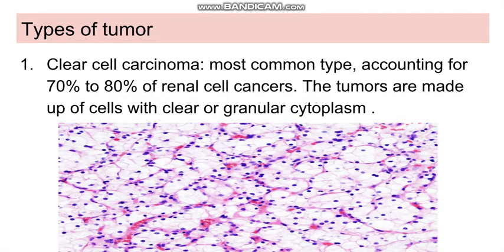Now going to the types of tumour. There are many types: there is clear cell carcinoma, then papillary cell carcinoma, then chromophobe cell variety. Firstly we will discuss about clear cell carcinoma. This is the most common type, accounting for around 70-80% of renal cell carcinoma.